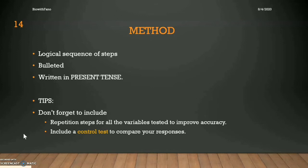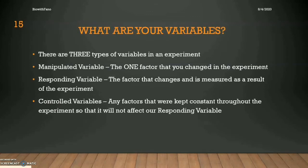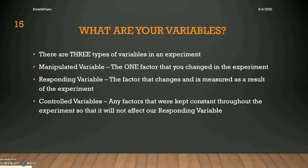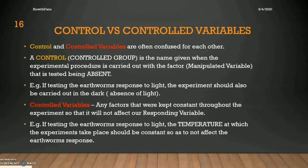A control, sometimes called a control test, is the name given when the experimental procedure is performed on the apparatus without the manipulated variable. There are three types of variables. The manipulated variable is the one factor that you change in an experiment. The responding variable is the factor that changes and is measured as a result of the experiment. The control variables are any factors that you keep constant throughout the experiment so that they will not affect your responding variable. Take note that a control and a controlled variable are not the same things — they have similar names, but they have very different meanings.